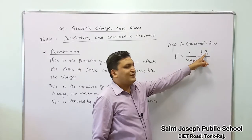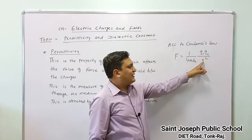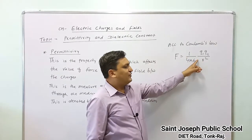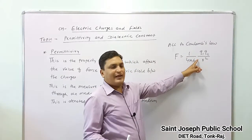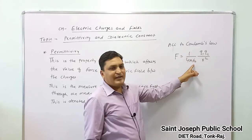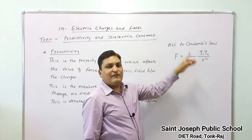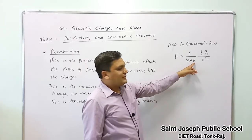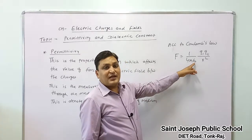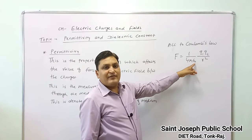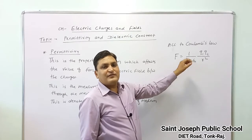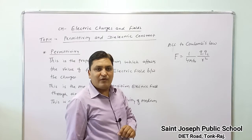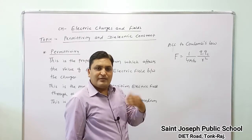Here q1 and q2 are the charges placed at a specific distance r, and 1 upon 4 pi epsilon naught, which equals k, is the property of the medium. Epsilon naught is the permittivity of vacuum, and its value is 8.854 into 10 to the power minus 12.